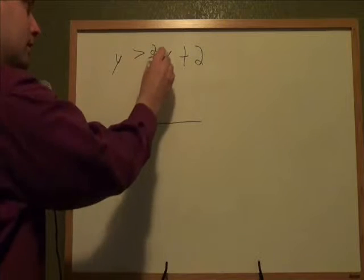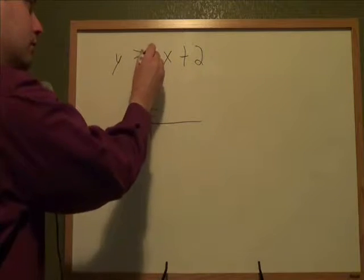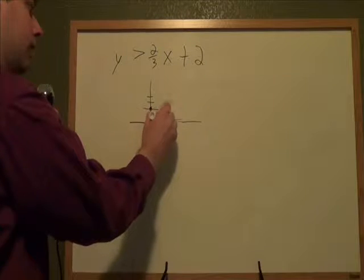Then my slope is the number right next to the x, is that 2/3, so I go up 2 and right 3.